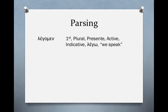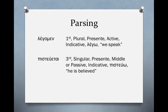When we parse a verb we include person, number, tense, voice, and mood, along with the lexical form and translation. So if we saw 'legomen,' we know from the personal ending -men that it's first person plural, present active indicative; lexical form 'lego'; translation 'we speak.' If we saw 'pistountai,' we know from the personal ending that it's third plural, present middle or passive — they share the same form and context determines which — indicative; lexical form 'pistoumai'; translation 'they are believed.'